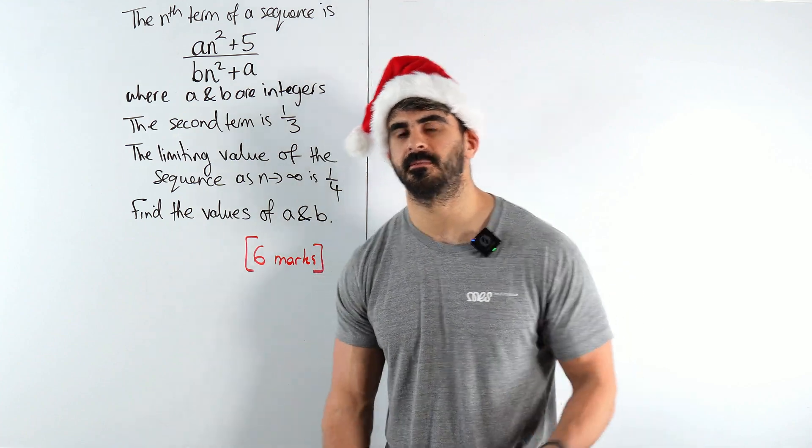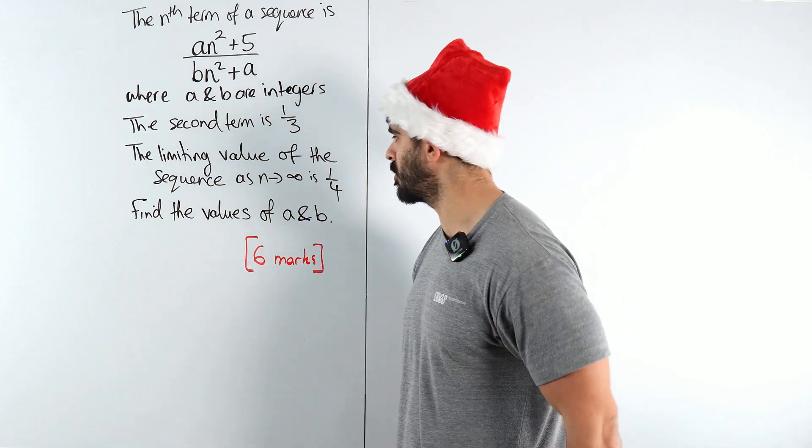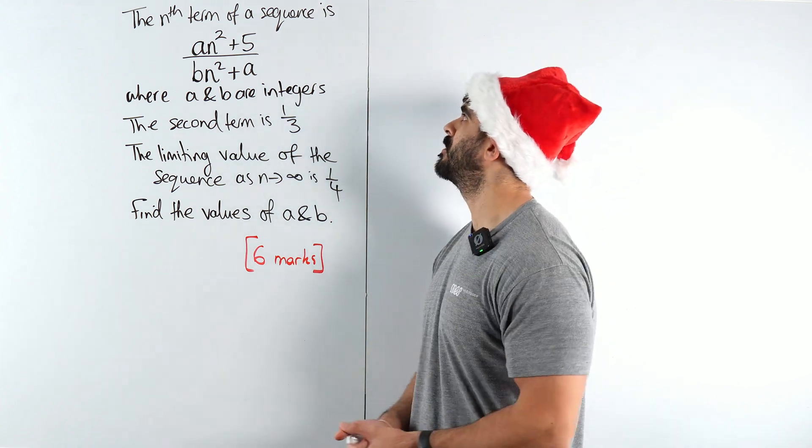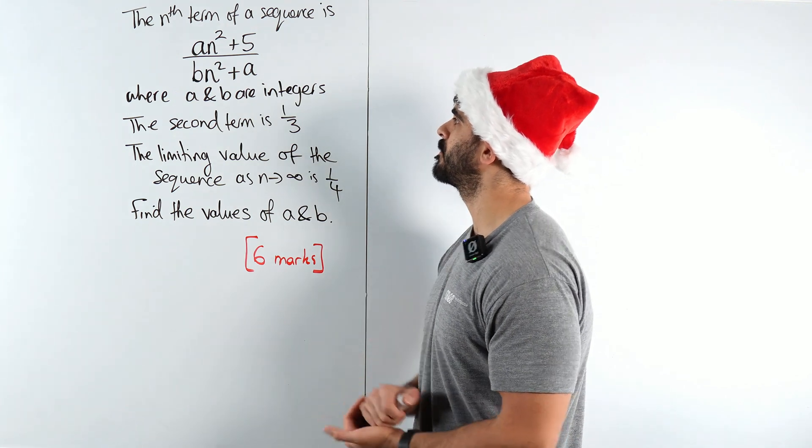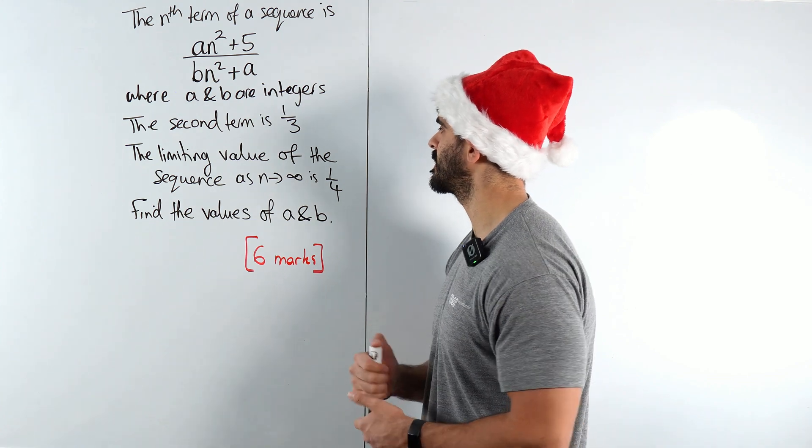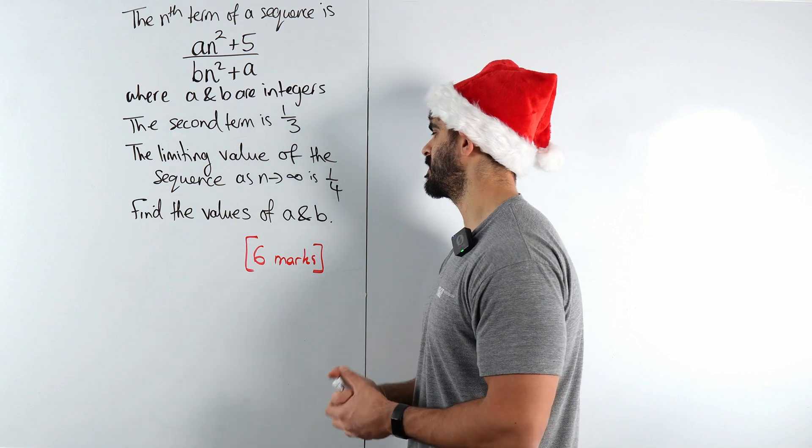Further GCSE mathematics, six mark question, non-calc. It says the nth term of a sequence is (an²+5)/(bn²+a), where a and b are integers. The second term is a third, the limiting value of the sequence as n tends to infinity is a quarter. Find the values of a and b.